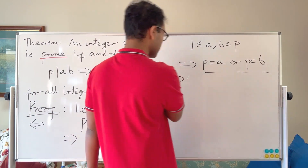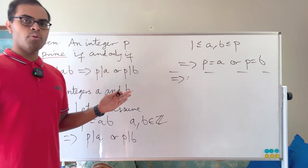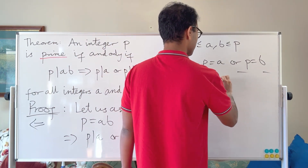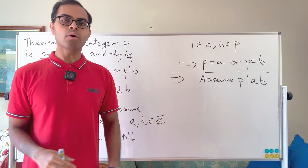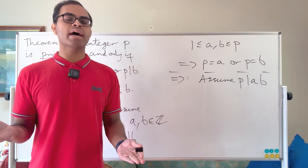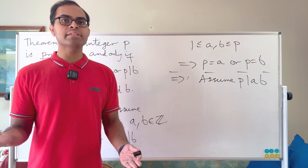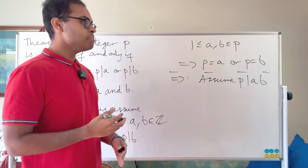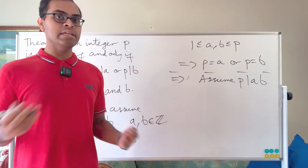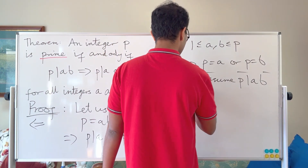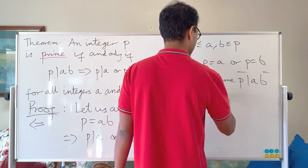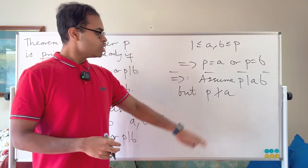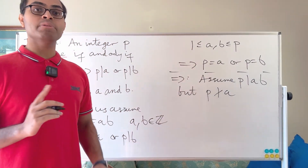This is the forward direction. We know that the only factors of p are 1 and itself. Let's assume that p divides ab. We want to show that p has to divide one of the two. Let's assume without loss of generality that p does not divide a. If p divides a then our statement is established. So let's assume p does not divide a and show that p divides b. We assume p divides ab but p does not divide a — that's denoted by this symbol in number theory. Then we're going to show that p divides b.